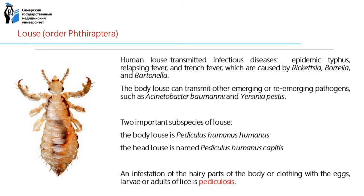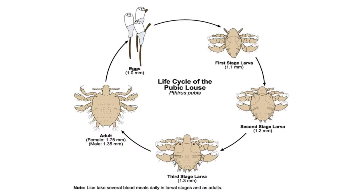The body louse can transmit other emerging or re-emerging pathogens such as Acinetobacter, Bartonella, and Yersinia pestis. Two important subspecies are the body louse Pediculus humanus humanus and the head louse Pediculus humanus capitis. Infestation of hairy parts of the body or clothing with eggs, larvae, or adults of lice is named pediculosis. Metamorphosis of the louse is simple — nymphs molt three times, each stage becoming larger and more like the adult. The egg stage lasts 6–14 days, and hatching to adult takes 8–16 days.